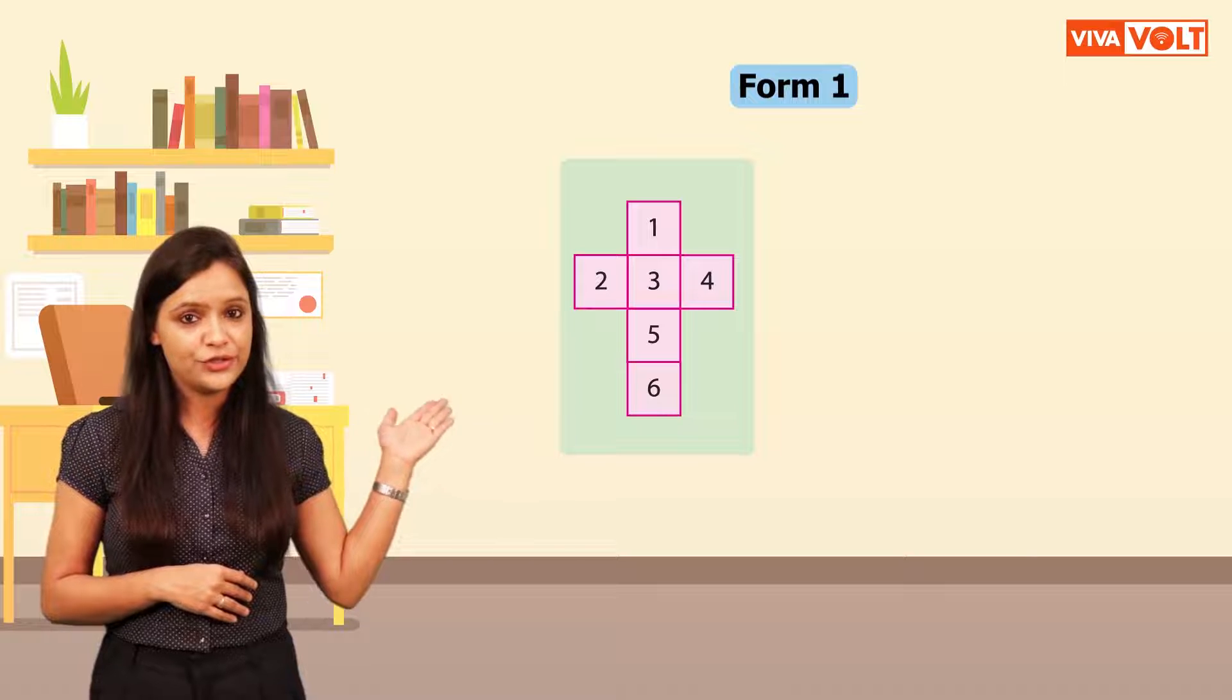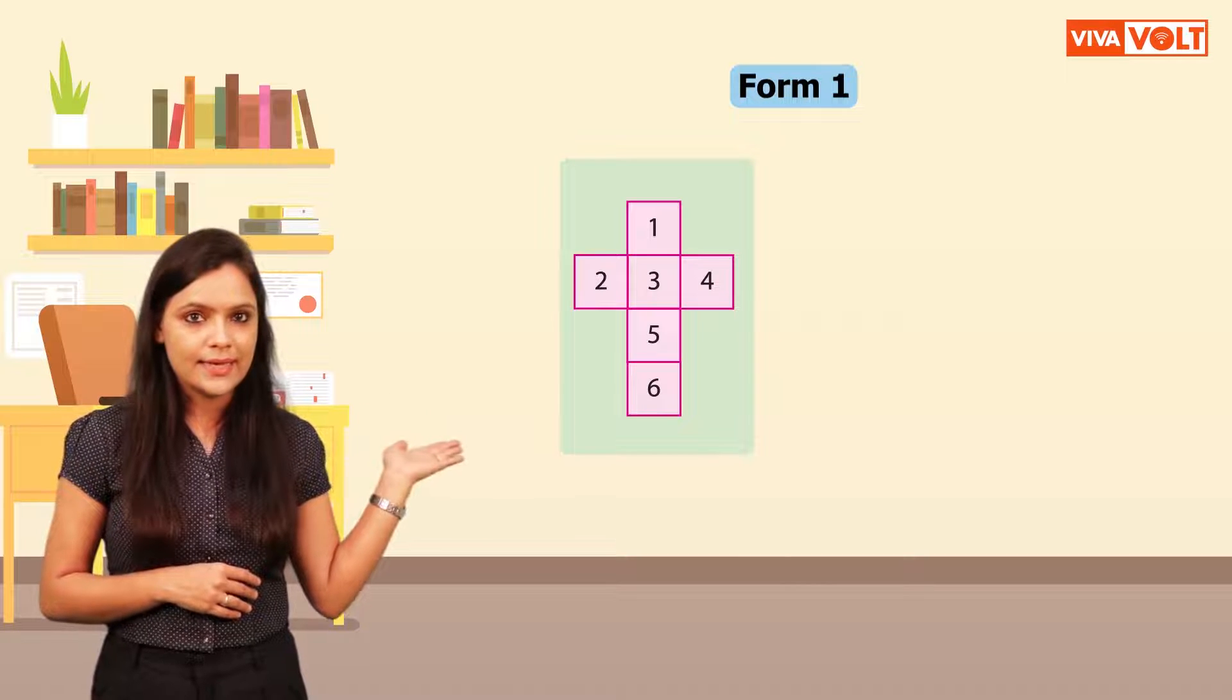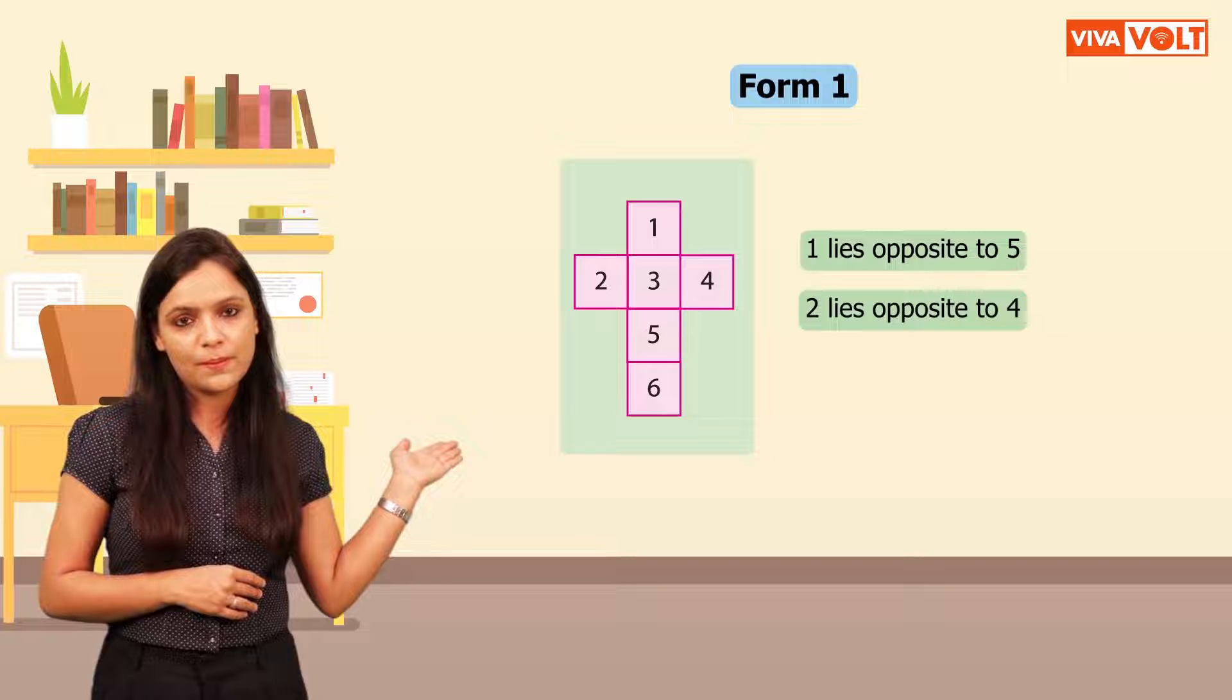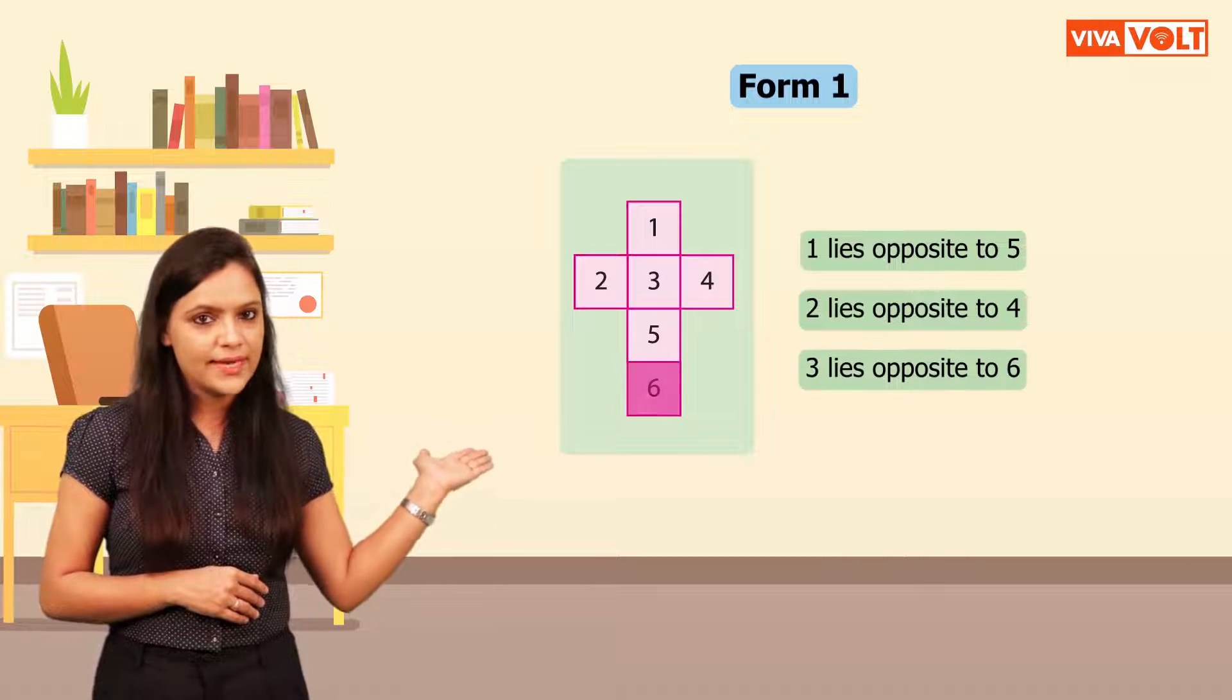Form 1 will appear as shown. In this case, 1 lies opposite to 5, 2 lies opposite to 4, 3 lies opposite to 6.